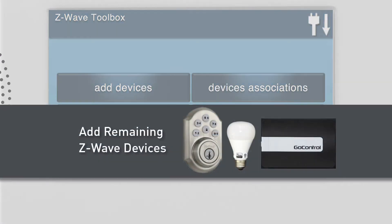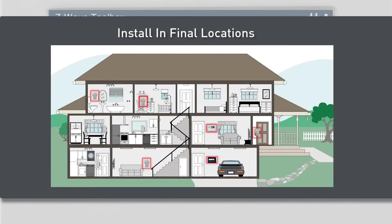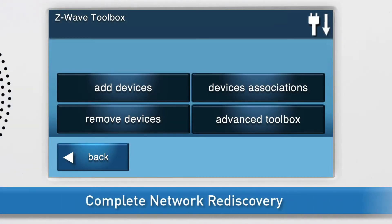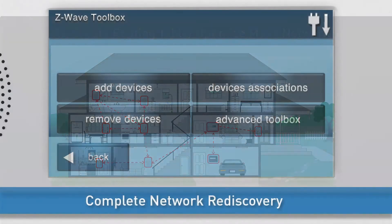If you have any remaining Z-Wave devices, you can add them now. Then install the panel and all Z-Wave devices into their final locations. Lastly, complete a network rediscovery. During network rediscovery, the panel will recreate its Z-Wave Routing Table and optimize the mesh Z-Wave network.